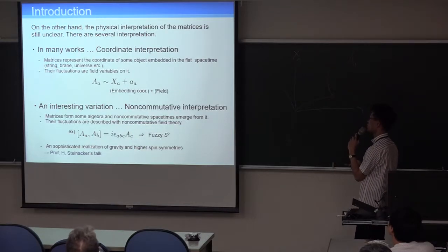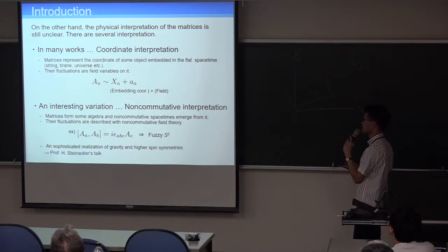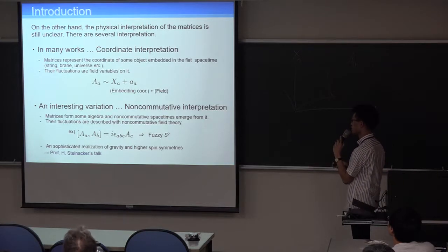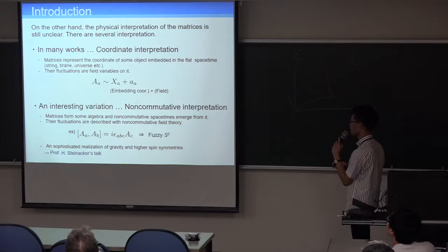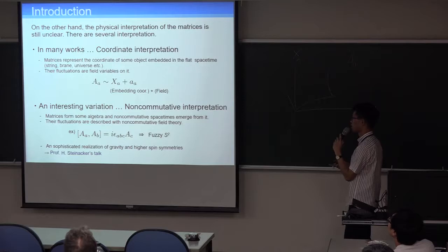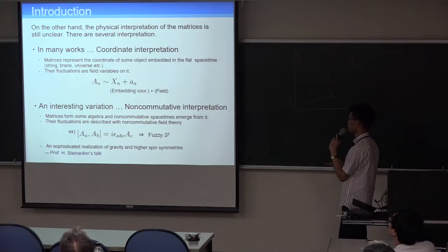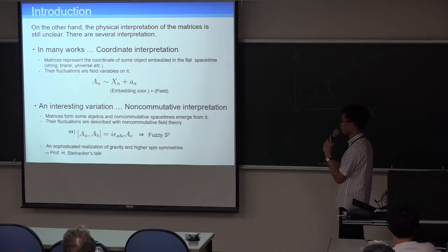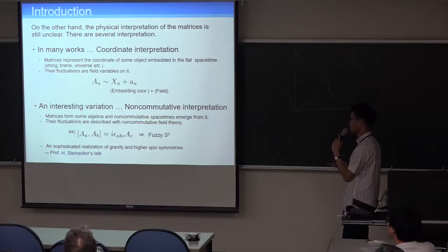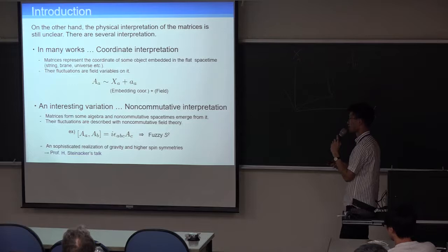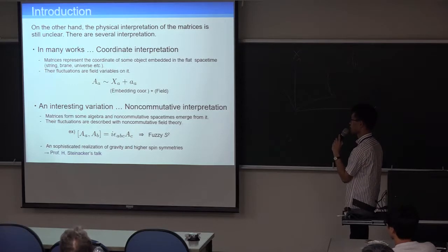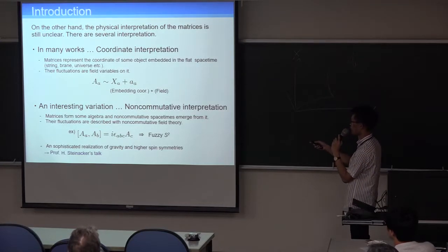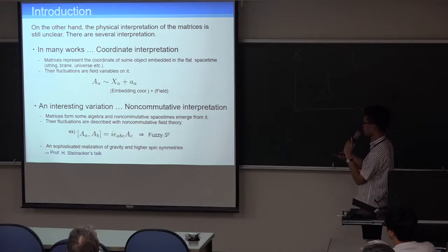And on the other hand, the physical interpretation of the matrices is still unclear. There are similar interpretations. And in most, in many researchers, matrices are coordinates. And it means that matrices represent the coordinate of some object evident in flat space-time. And what the object is dependent on the work, string, brain, universe, or etc.